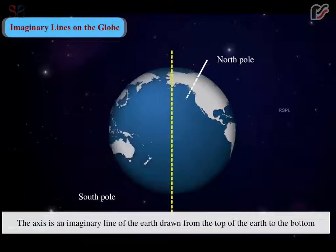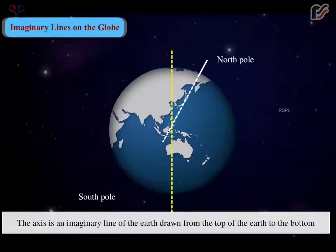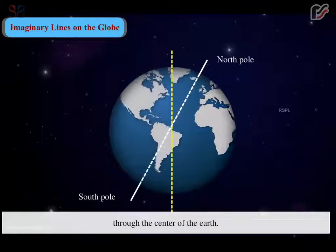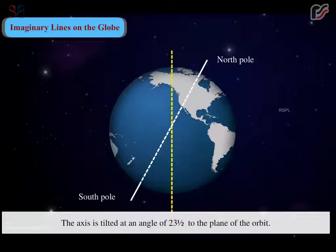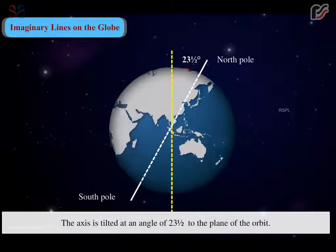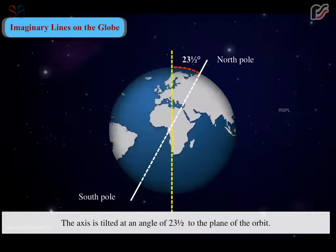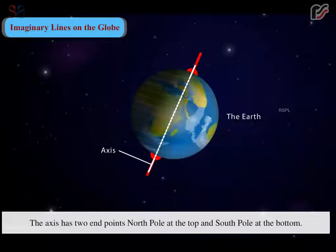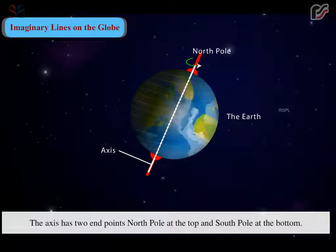The axis is an imaginary line of the Earth drawn from the top of the Earth to the bottom through the center of the Earth. The axis is tilted at an angle of 23.5 degrees to the plane of the orbit. The Earth rotates on the axis line. The axis has two endpoints, north pole at the top and south pole at the bottom.